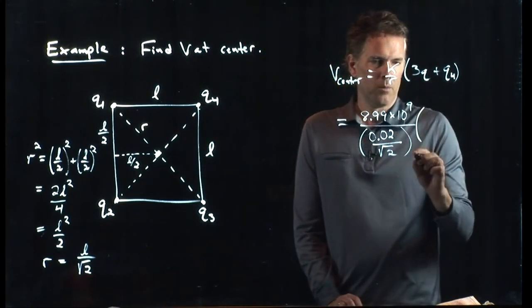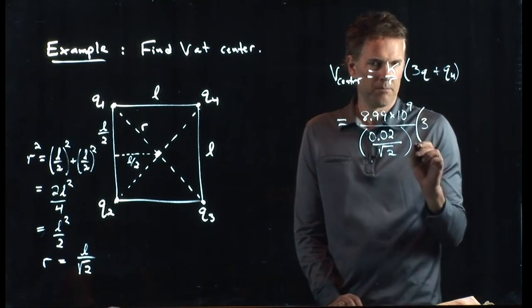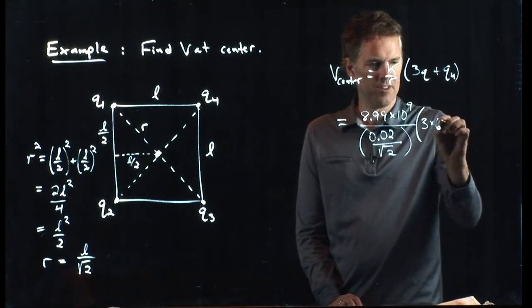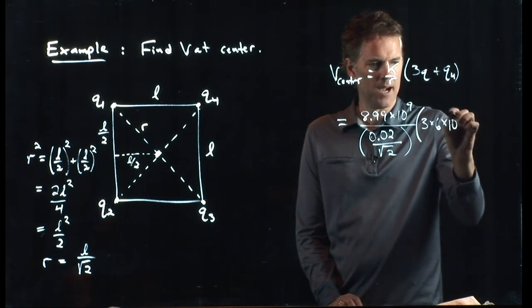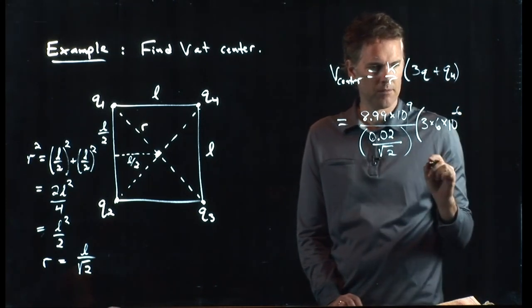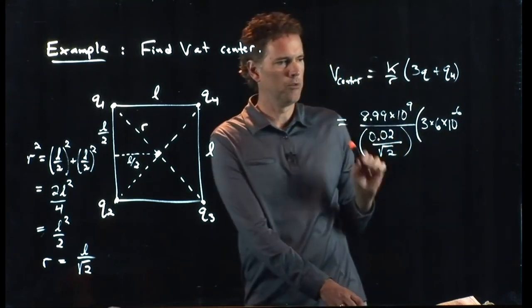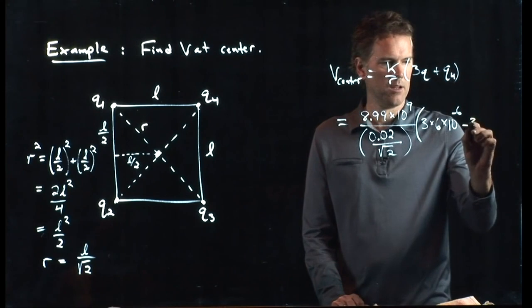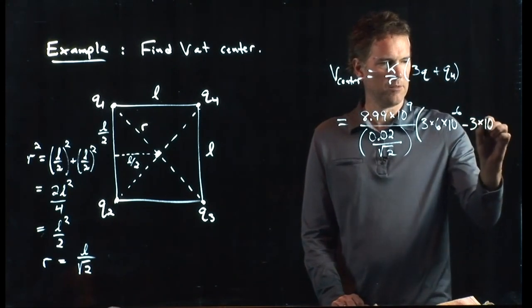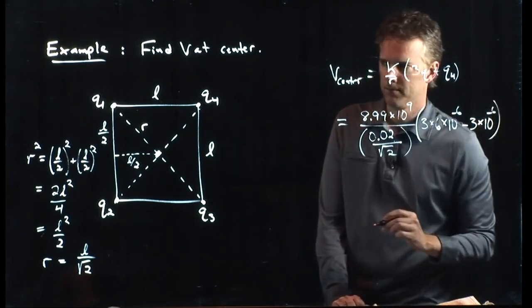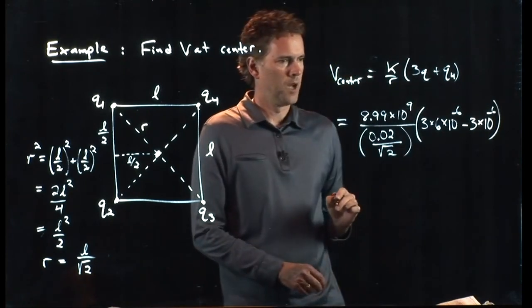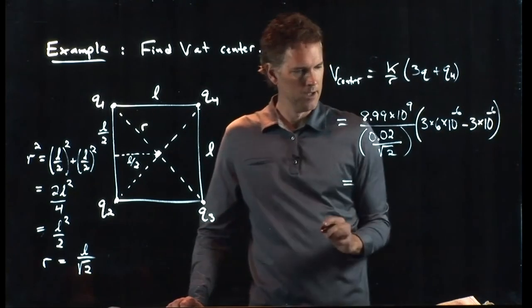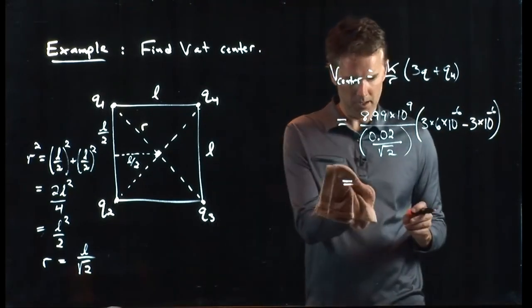Q we said was 6 microcoulombs, so 3 times 6 times 10 to the minus 6. And then Q4 we said was negative 3 microcoulombs. Now we can plug in all these numbers. Why don't you guys try it in your calculator? I'll see if I can approximate it here.